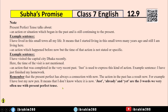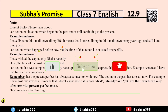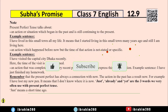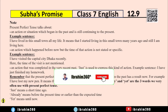In Present Perfect Tense, the signal words are: already, just, yet, and recently. 'Just' means a short time ago. 'Already' means before the present time or earlier than the expected time. 'Yet' means until now.